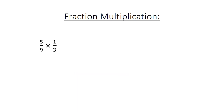Fraction multiplication: 5 over 9 times 1 over 3. 5 times 1 equals 5. 9 times 3 equals 27. So the answer is 5 over 27.